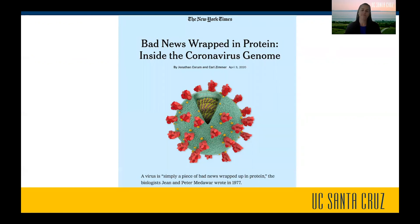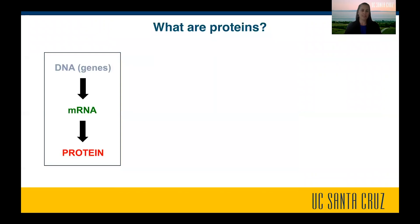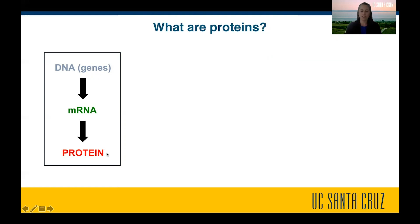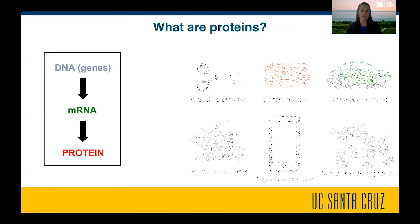So what's a protein? Proteins are the molecules that are encoded in DNA and in genes. In our own cells in our body, we have our genomes and that contains thousands and thousands of genes. These genes are like a recipe book — they contain the information to make something called a messenger RNA, which is the template to make proteins.